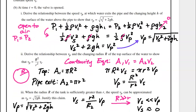The next question asks us to derive the relationship between VP and the changing radius R of the top surface of the water to show that VP equals R² divided by r² times VS. We use the continuity equation: A₁V₁ = A₂V₂, where A is cross-sectional area and V is the speed of the fluid. Setting A₁ = πR² at the top surface and A₂ = πr² at the pipe exit, substituting gives πR²·VS = πr²·VP. Solving for VP, we get VP equals R² divided by r² times VS.